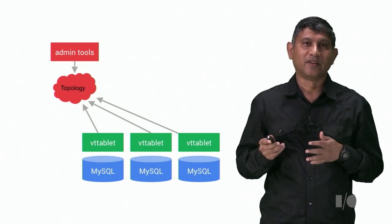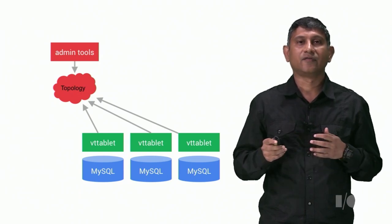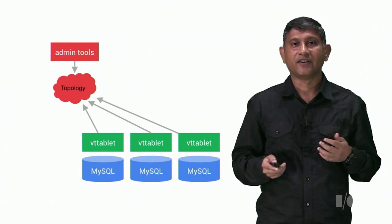For open source, we use ZooKeeper. And internally, we use Chubby. And using this, we took control of common workflows like taking servers in and out of rotation, master failover, et cetera.